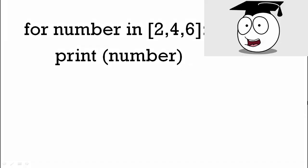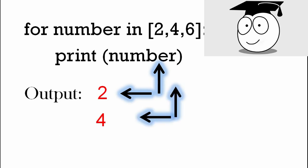And another example with the numbers. So we had two, four, and six. It's going to output two, then four, then six. It prints them all on a different line.